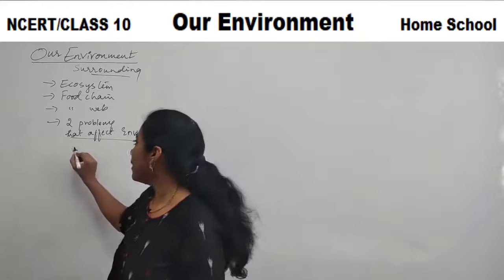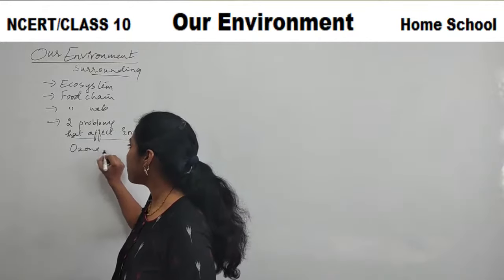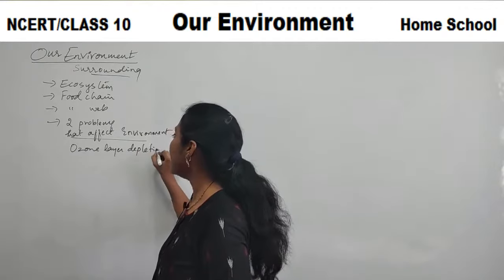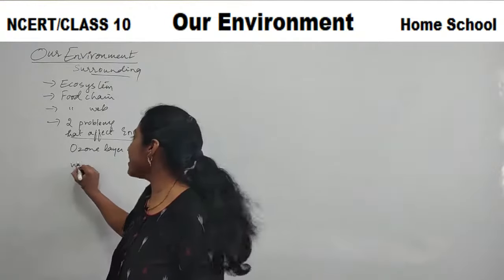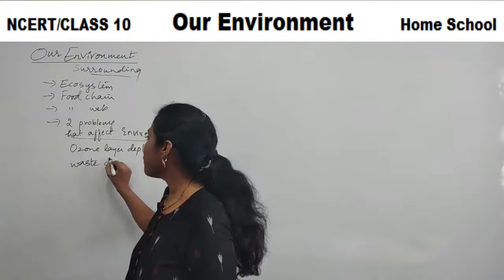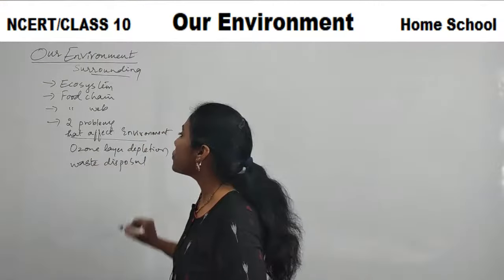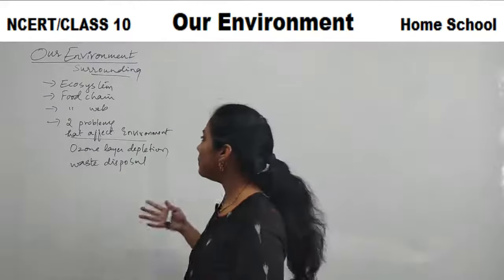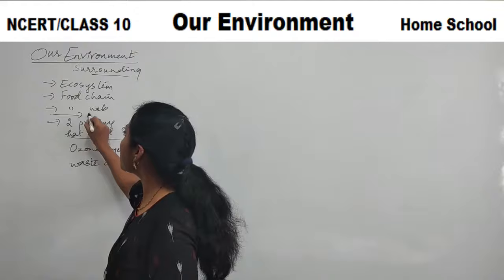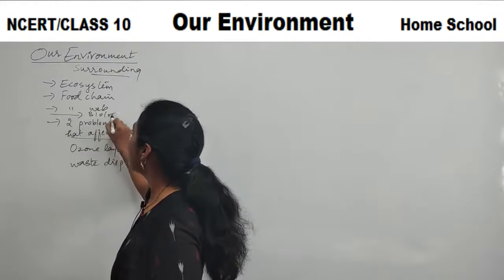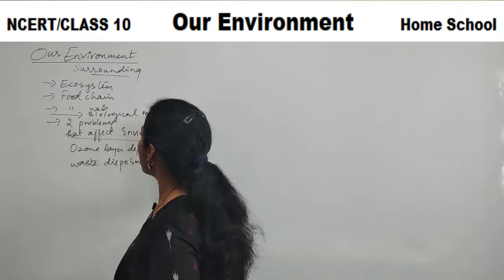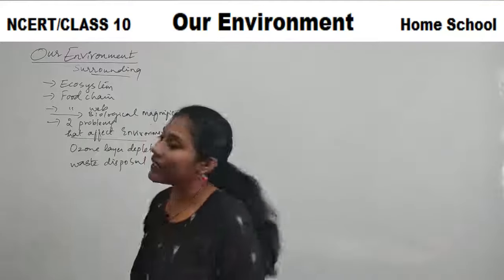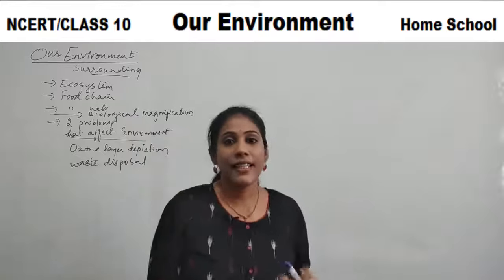The two major problems we discuss in this chapter are: ozone layer depletion and waste disposal. One more term we will study is biological magnification. These are the things we have to study in detail. In this video, let me speak about ecosystem entirely.